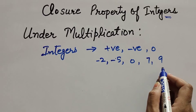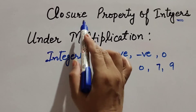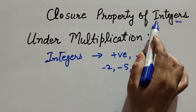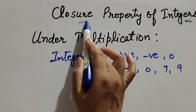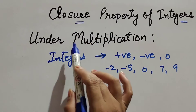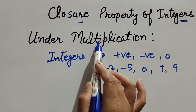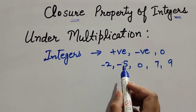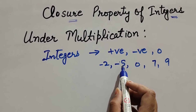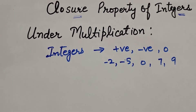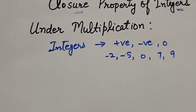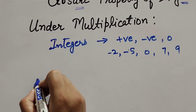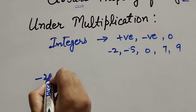We discuss the closure property of integers under multiplication. That means if we multiply any two integers, can we get an answer that is also an integer? So let us check. We suppose any two integers.